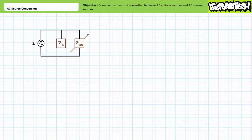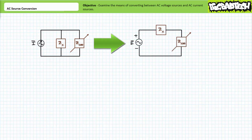Source conversion is a very easy circuit analysis technique that allows one to exchange an AC current source in parallel with a fixed load impedance for an equivalent AC voltage source in series with a fixed impedance without otherwise affecting circuit behavior.